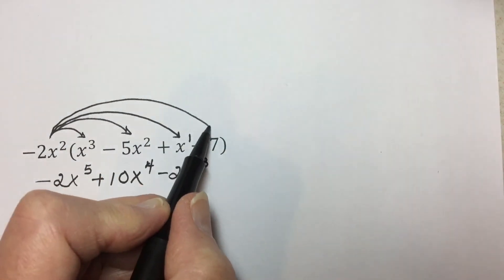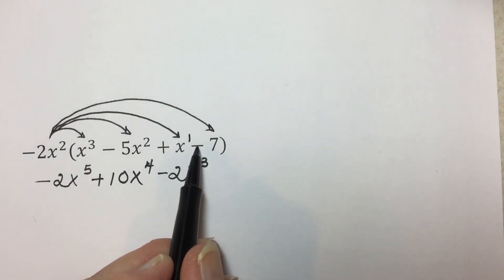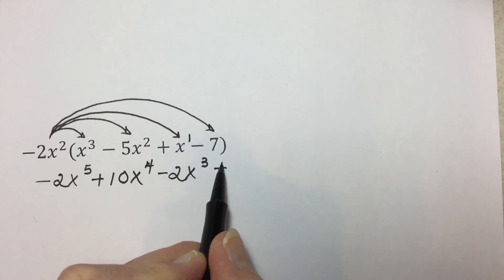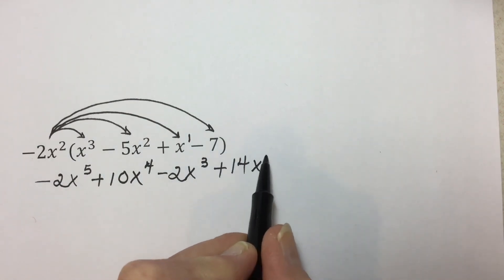And last, multiplying that monomial times the last term in the polynomial. Coefficient-wise, negative two times the constant of negative seven results in a positive, two times seven is 14. No variable here, but it is part of the monomial, so we include it as our last term from the result of this multiplication.